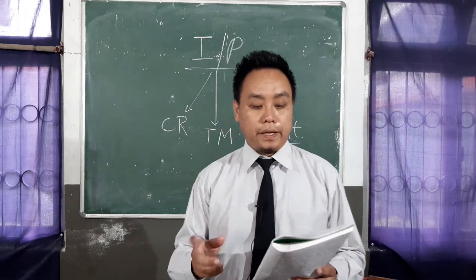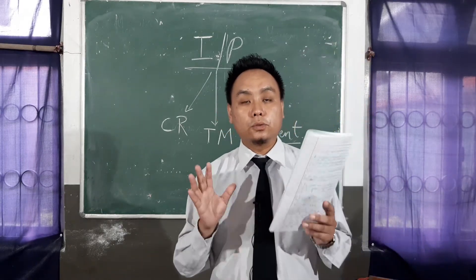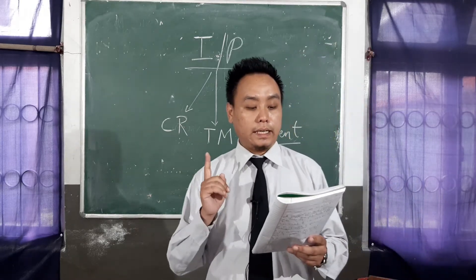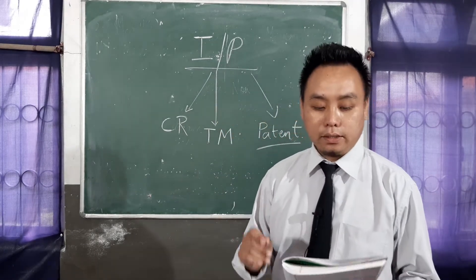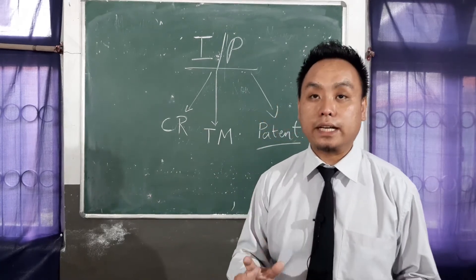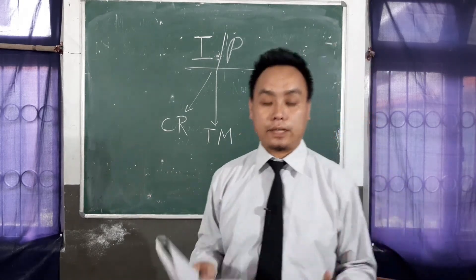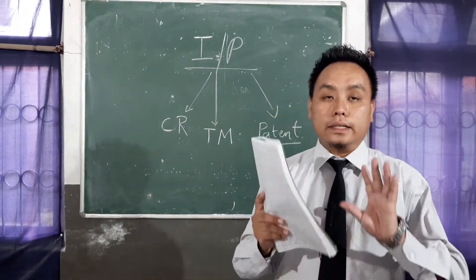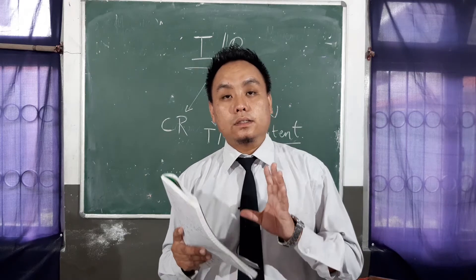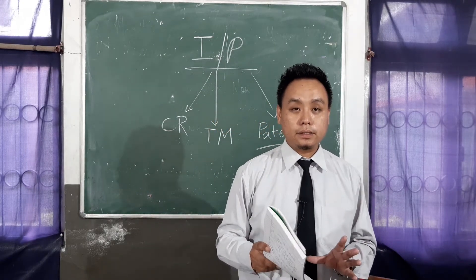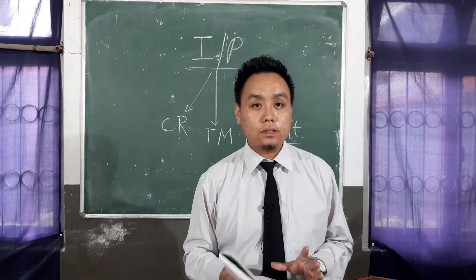What does patent mean? Patents are rights granted to an inventor. When the word patent comes, it is a right given to an inventor that allows them to exclude all others from making, using, or selling their invention for a specific period of time. So the main purpose of patent under intellectual property rights is that it gives rights to the inventor — the person who invents a new thing.